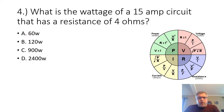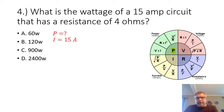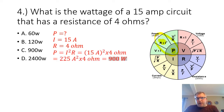Problem number four: what is the wattage of a 15-amp circuit that has a resistance of 4 ohms? We're looking for the power, and we are given the current at 15 amps and the resistance of 4 ohms. Our formula is P equals I squared times R. 15 squared is 225, so 225 times 4 ohms gives us an answer of 900 watts.